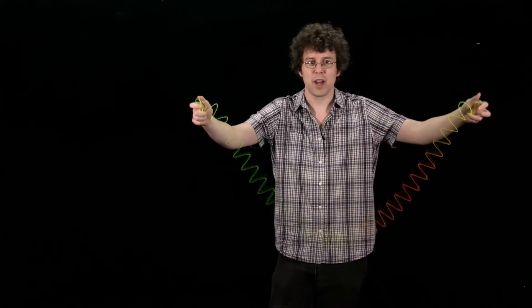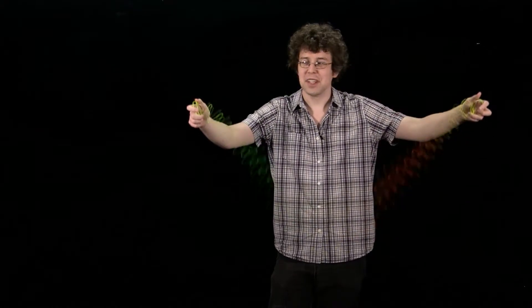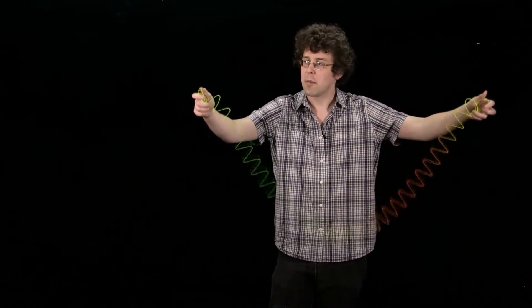Each end where my hands are, my hands are moving up and down very slightly because I'm providing a little bit of energy to keep the oscillation going. But in the ideal case, they'd be perfectly stationary. So my hands are essentially stationary and the center is just moving up and down. So if I were to make a snapshot graph of this, it would look something like this.